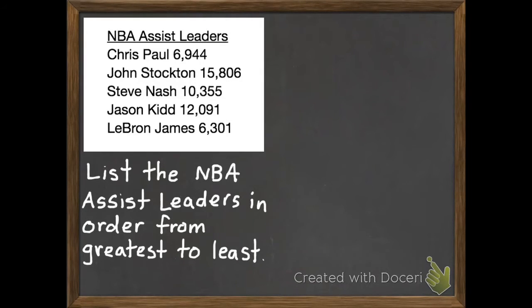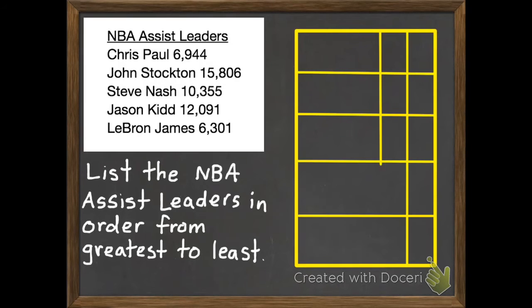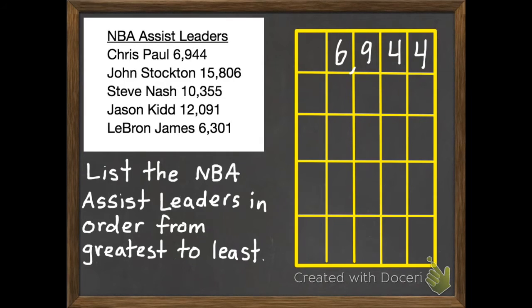To do this I'm going to use a place value chart. Here we go. It's important when I'm putting these in order that I make sure I put all the digits in the correct place value spot. You'll notice Chris Paul has 6,944 assists, so he hasn't made it to 10,000, so I wouldn't put anything in the 10,000 spot. So I'm going to start in the 1,000 spot with 6,944.